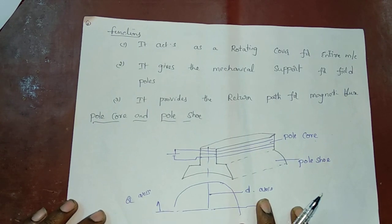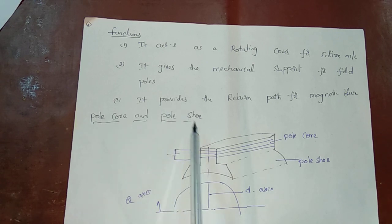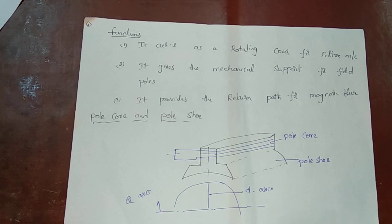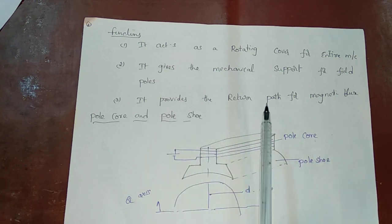Let's look at the magnetic frame. It acts as a protective cover for the entire machine. It gives mechanical support for the field poles and provides a return path for the magnetic flux.